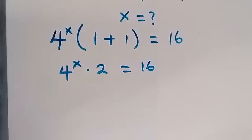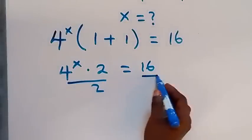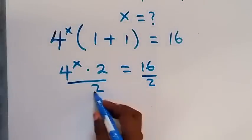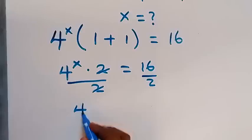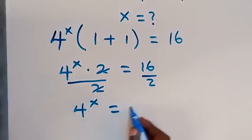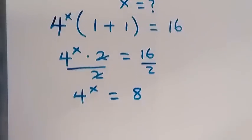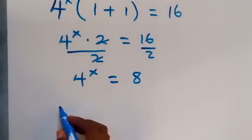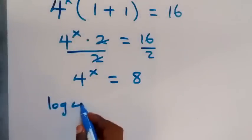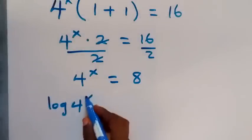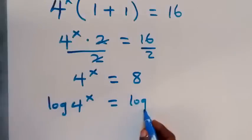We divide both sides by 2 — the 2s cancel — and we are left with 4 raised to the power x equals 8. Then let's take the log on both sides: log of 4 raised to the power x equals log 8.